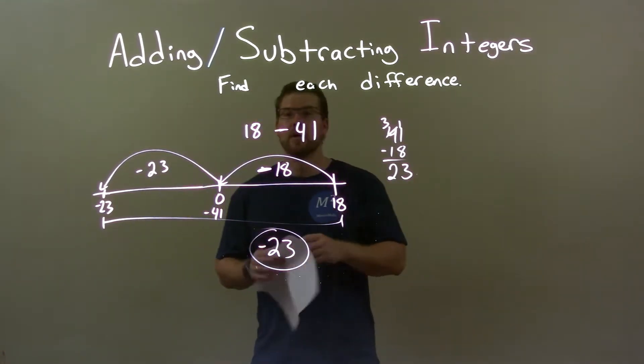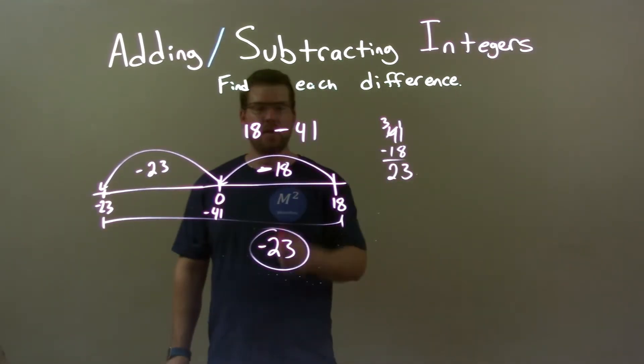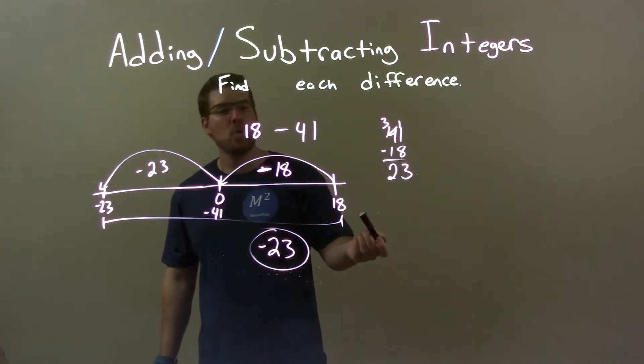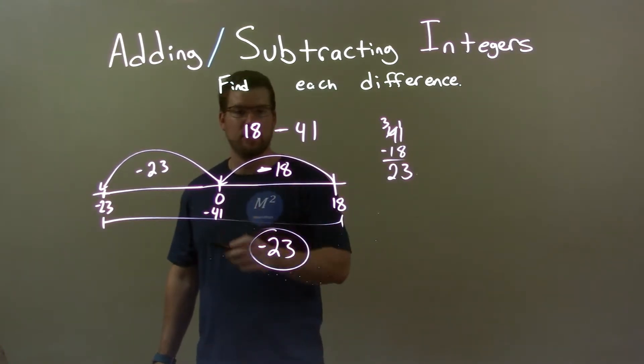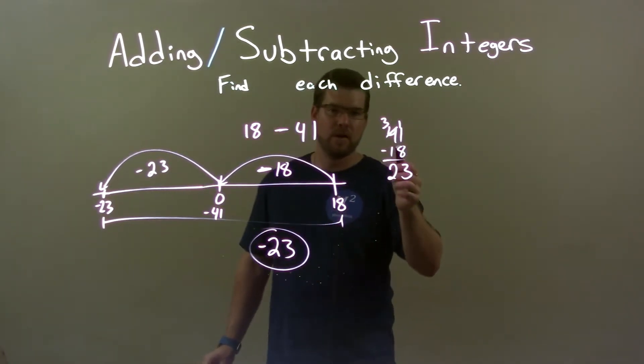So, quick recap. We're given 18 minus 41 and we have to solve that. Well, I start with 18 and I move 18 units to get to 0 to the left. So, I subtract 18 from there. That gave me, using my traditional method, 23.